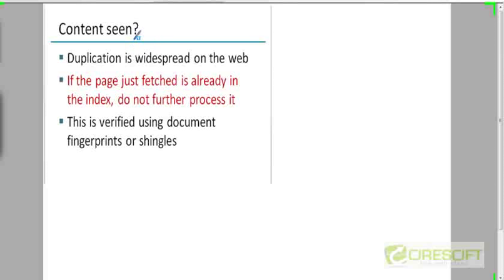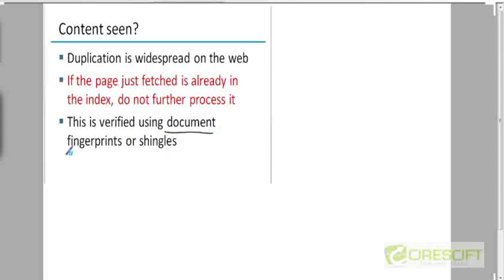If the content has already been seen — since there can be many duplicated web pages on the web — you verify the fingerprint or checksum and check whether the page has been seen before. If so, you don't process it; otherwise you process it. Document fingerprints are like checksums. There is also something called shingles — you can think of it as a form of document fingerprint.